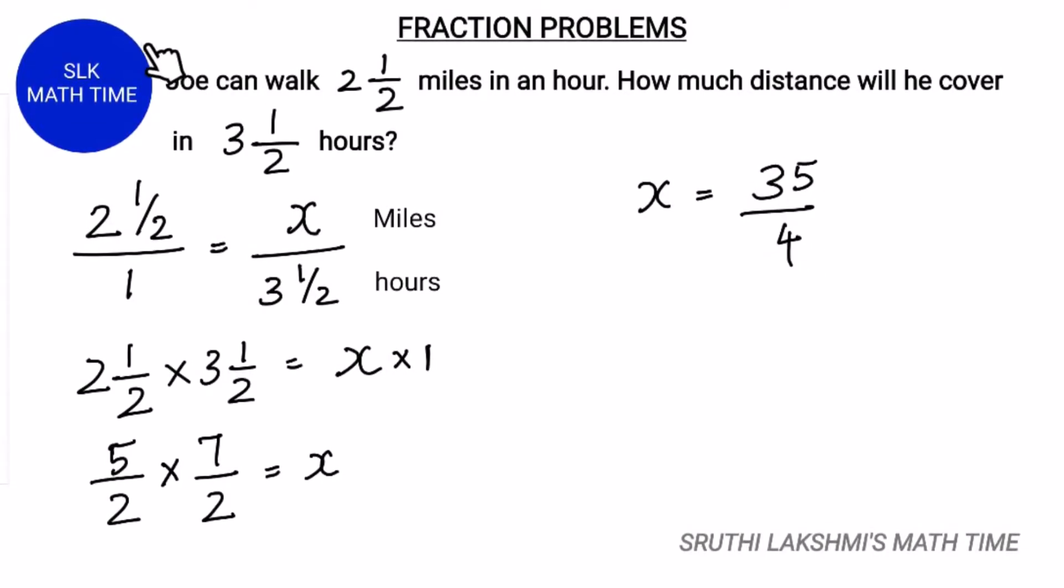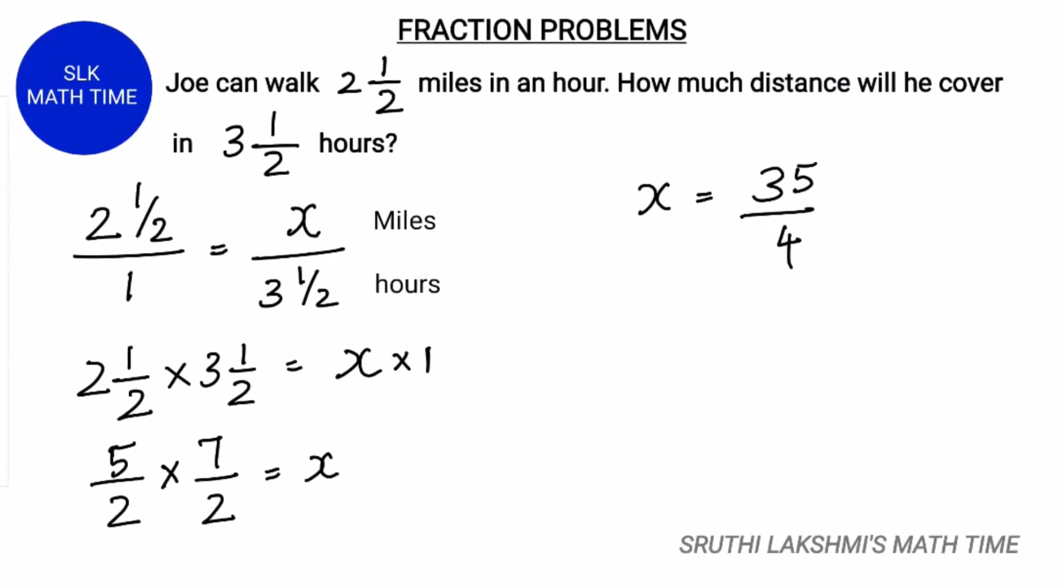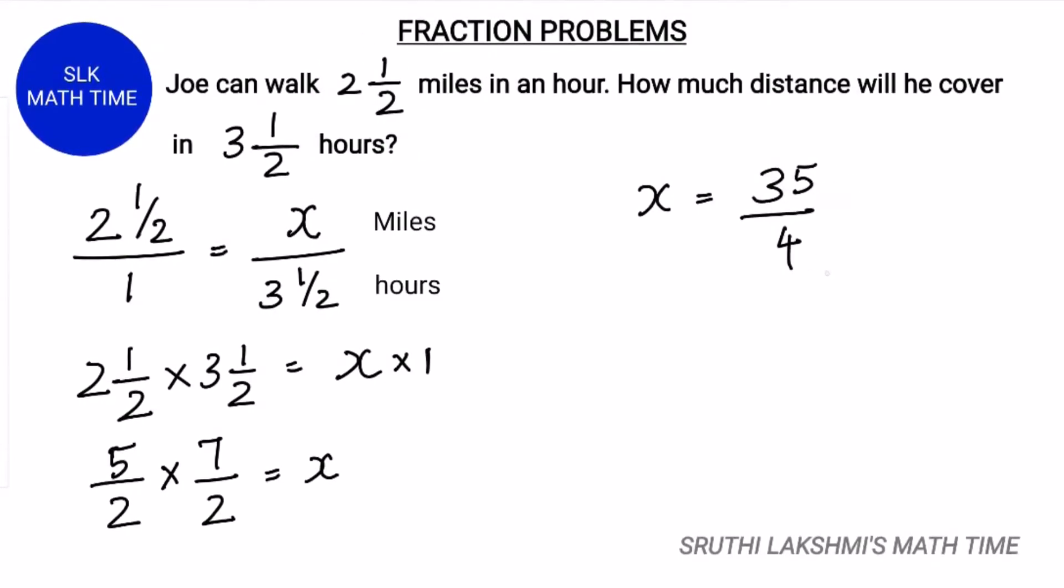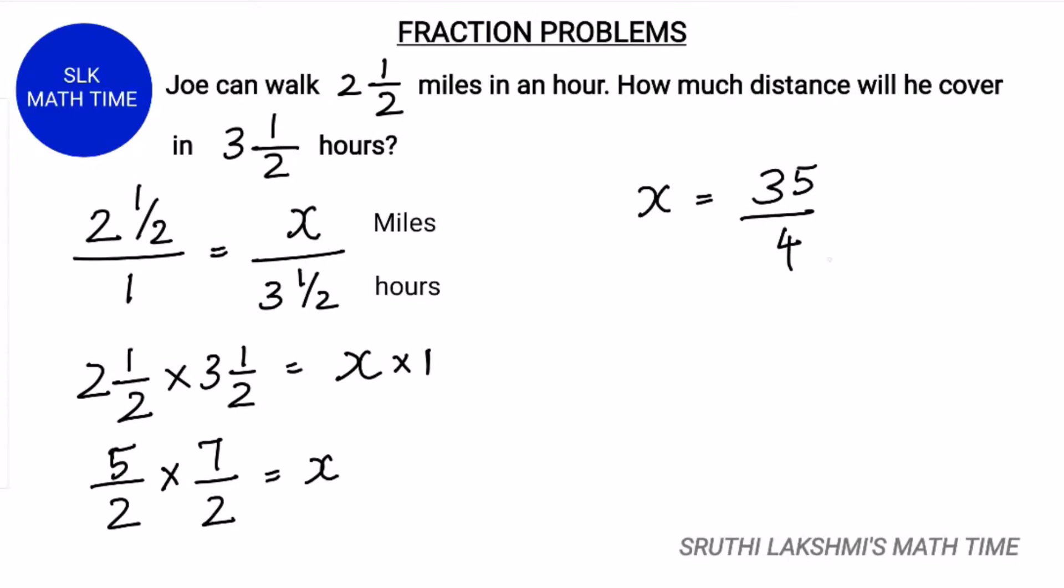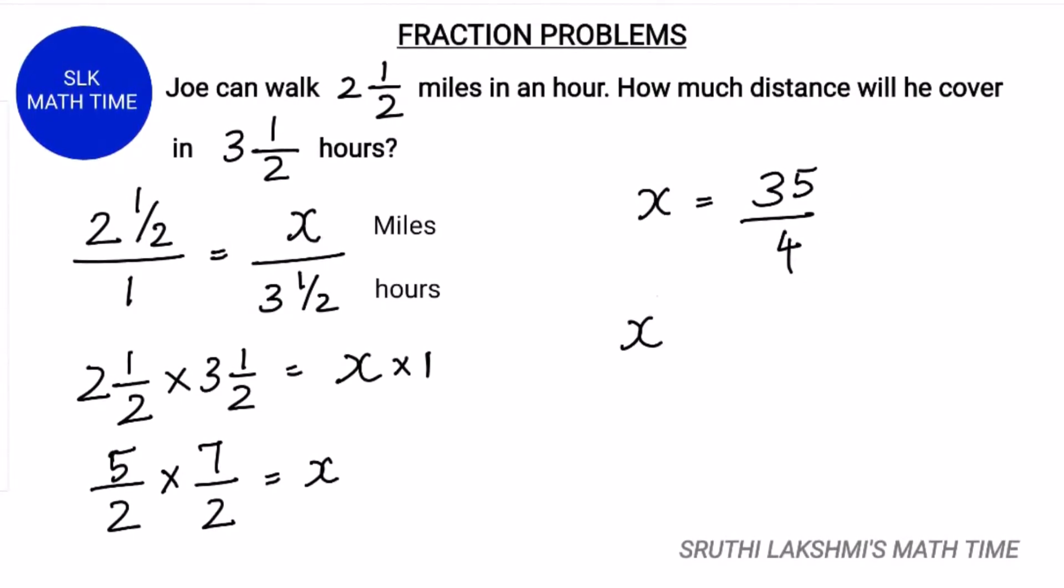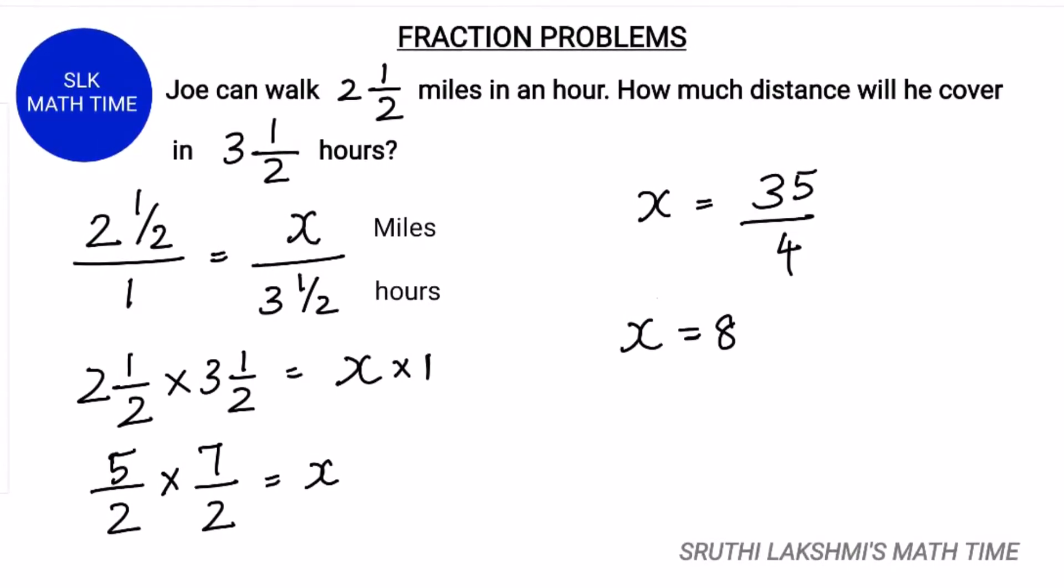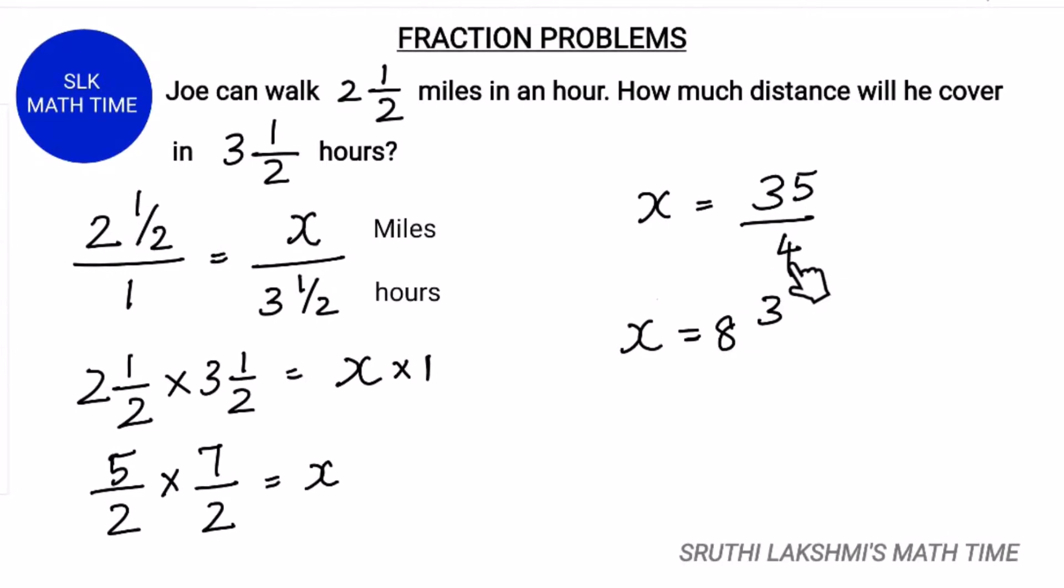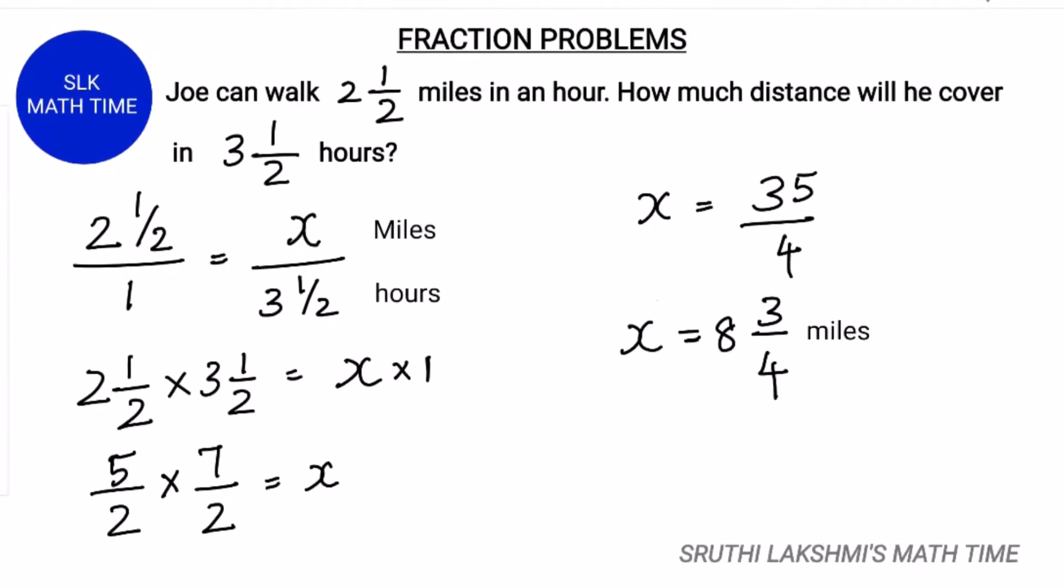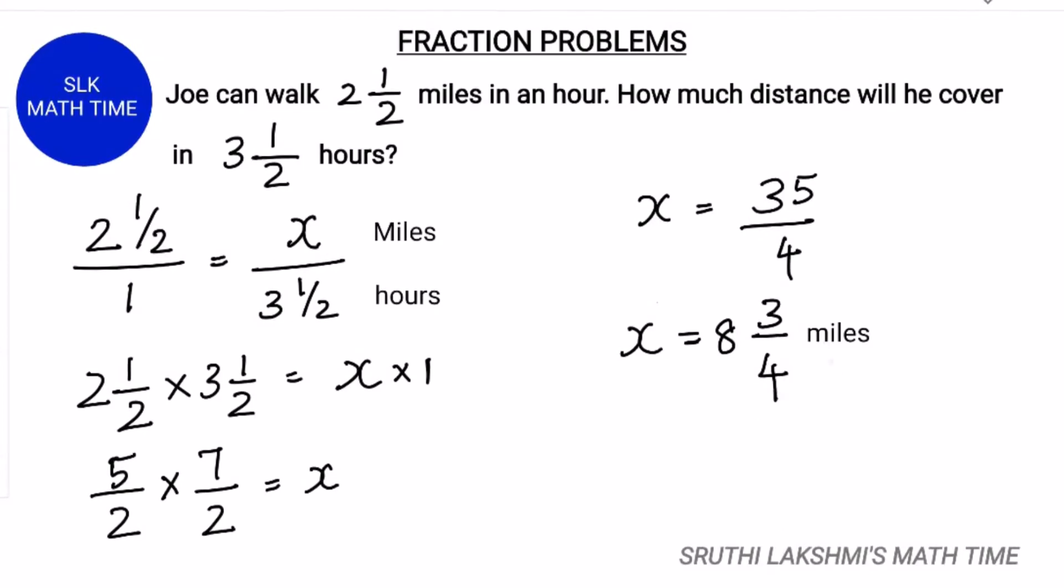Since the problem was in mixed numbers, we have to change 35 by 4 to a mixed number. How many 4s can fit in 35? Eight 4s can fit in 35, and the remainder is 3 and the denominator stays the same. So x equals 8 3 by 4 miles. So Joe can walk 8 3 by 4 miles in 3 and a half hours.